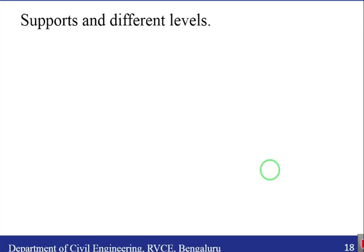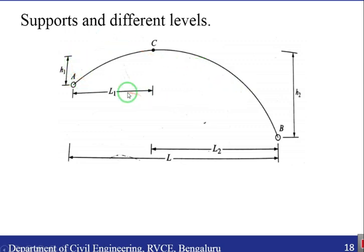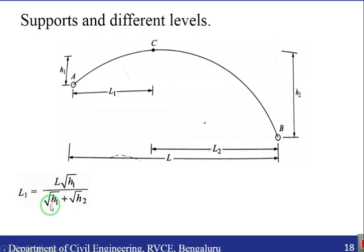We are going to look at arches whose supports are at different levels. When the supports of an arch are at different levels, we calculate the values of h1, h2, l1, and l2 using these relations: l1 equals l times the square root of h1 divided by (square root of h1 plus square root of h2), and similarly l2 equals l times the square root of h2 divided by (square root of h1 plus square root of h2).